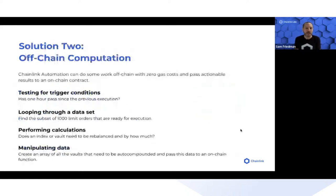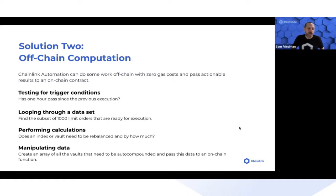Off-chain computation might be as simple as testing a trigger condition — like whether a certain amount of time has passed — or a combination of things like has time passed and has a certain value or state changed to meet a certain condition.